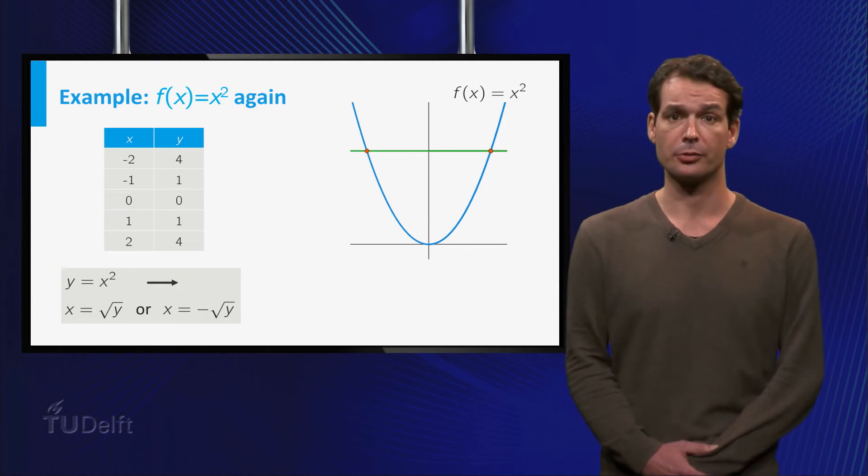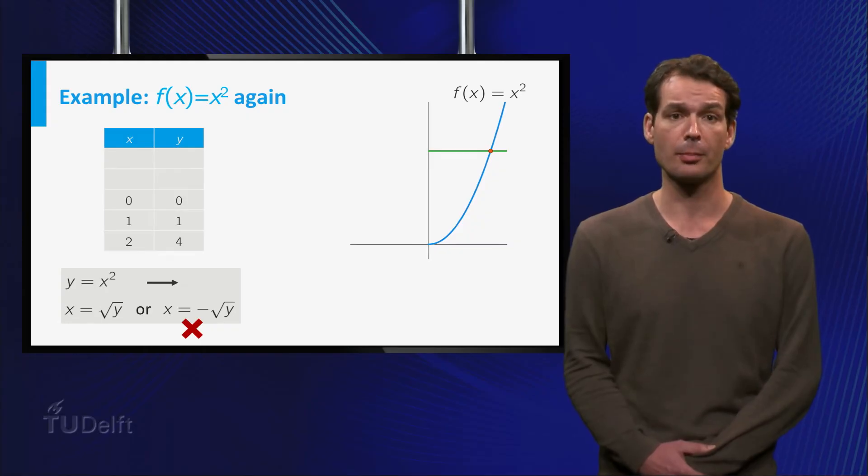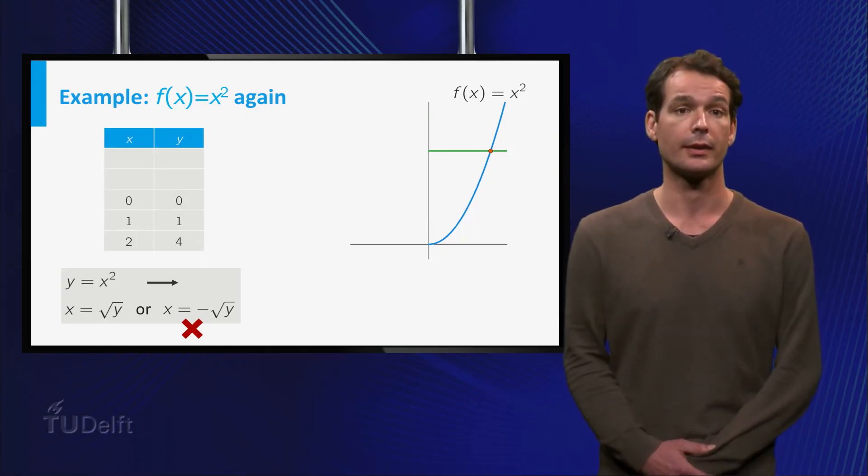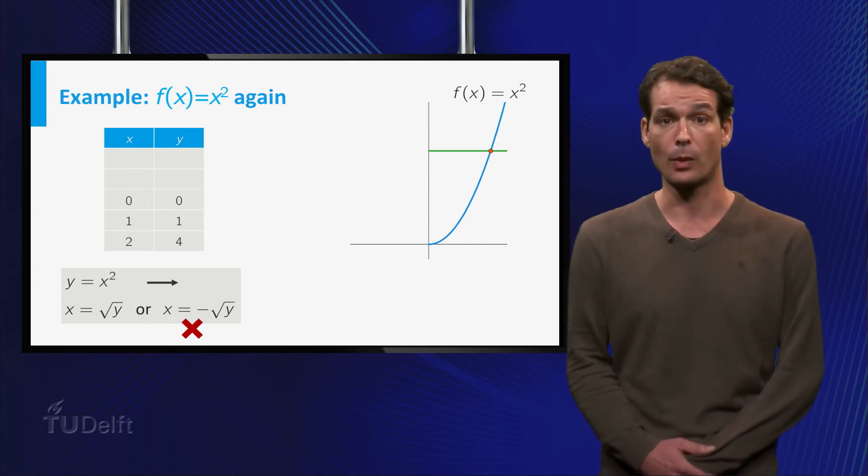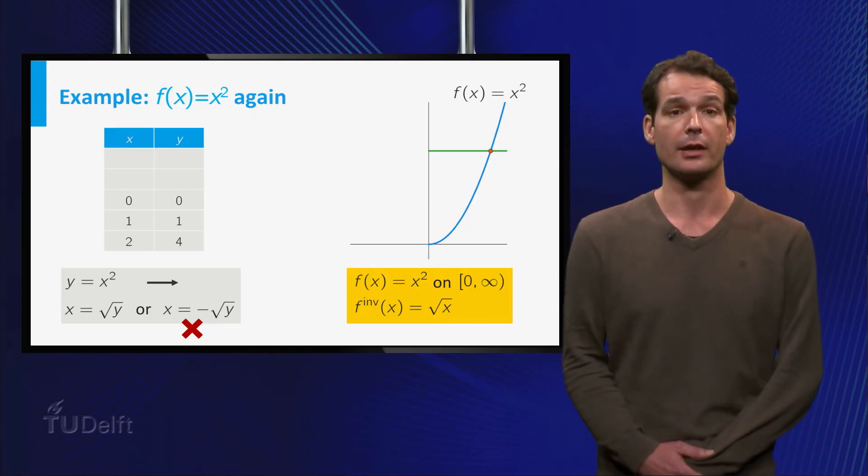If we apply the horizontal line test to the graph of X squared, we see that it intersects a horizontal line at more than one point. So this is not an injective function. However, if we take the positive real numbers as domain of X squared, we see that the graph now intersects horizontal lines at just one point. So now it is injective. In this case, for positive Y, the equation Y equals X squared has exactly one solution, namely X is equal to the square root of Y. Now interchanging X and Y, we see that the inverse of X squared with domain the positive real numbers is the square root of X.